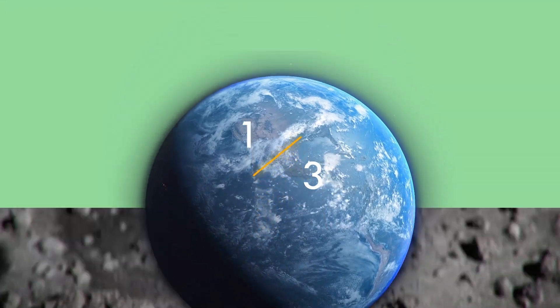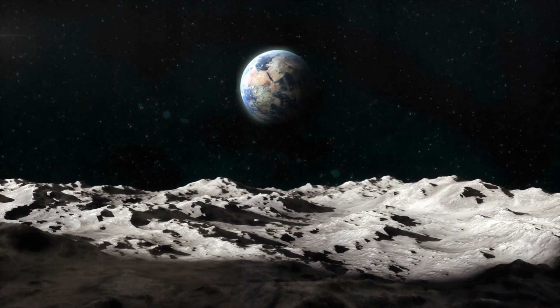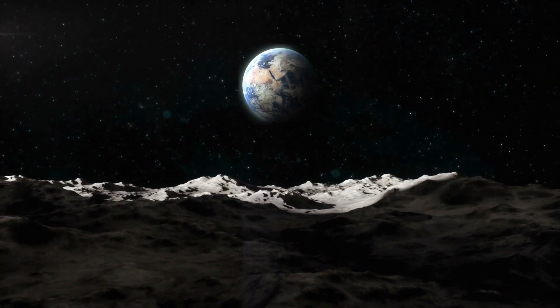Furthermore, a fine abrasive dust known as regolith coats the Moon's surface, posing a danger to machinery and human lives.